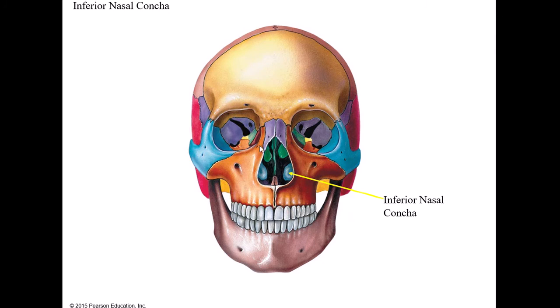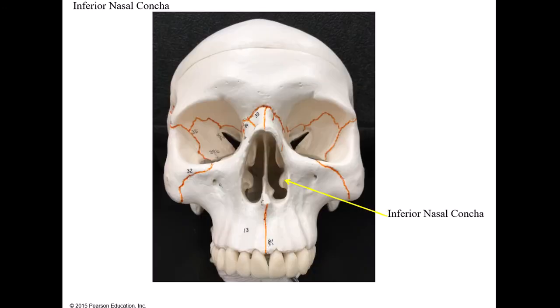The middle nasal concha are part of the ethmoid bone, but there are two other scroll-like structures at the bottom of the nasal cavity that are facial bones - these are called the inferior nasal concha, with one on each side. You can see both inferior nasal concha clearly here.